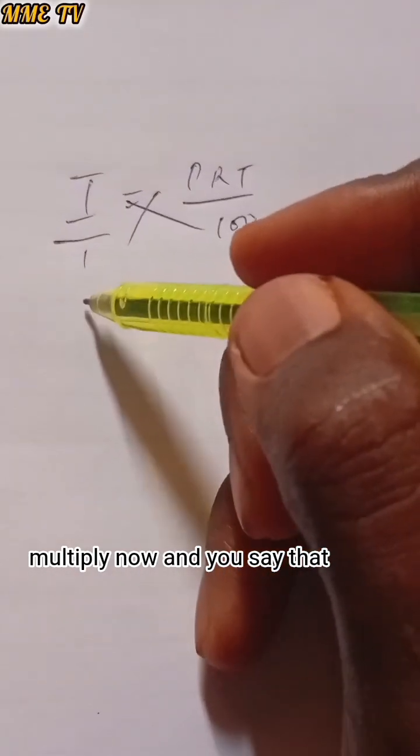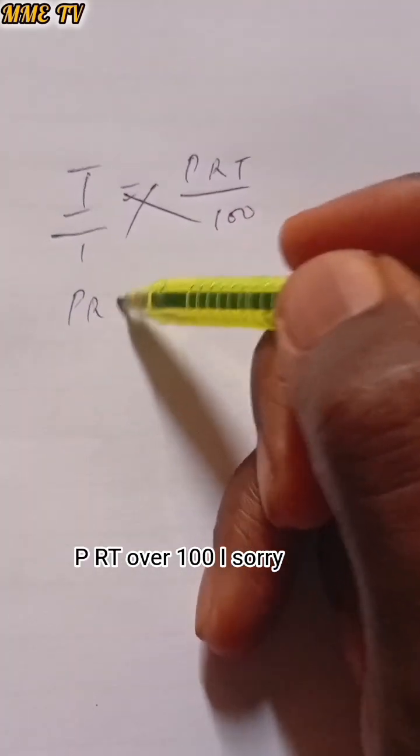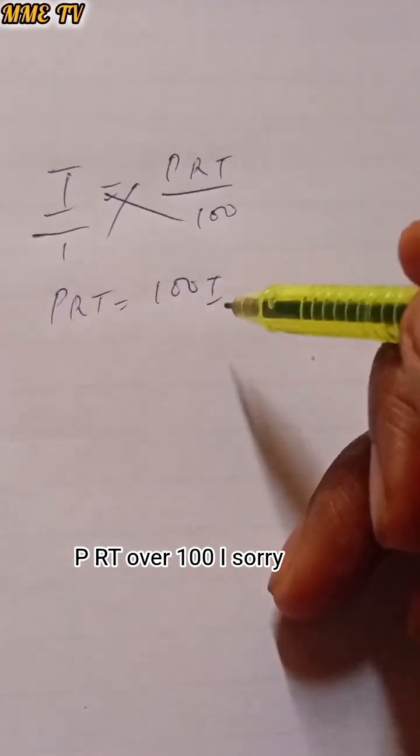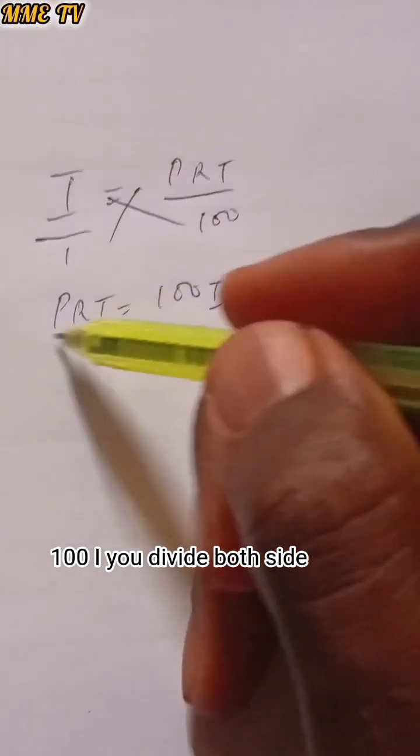cross multiply. Now you say that PRT over 100... I'm sorry, PRT is equal to 100I.